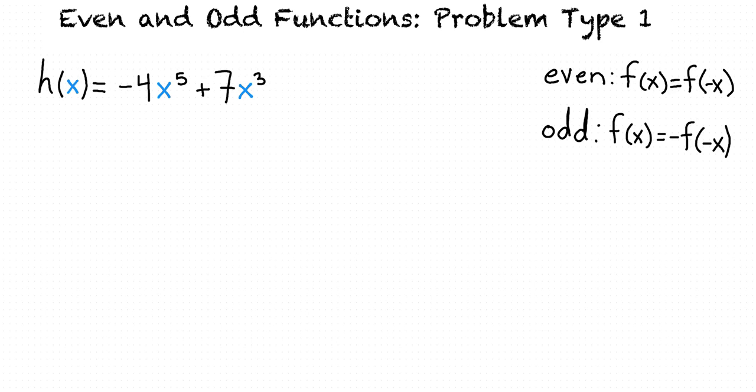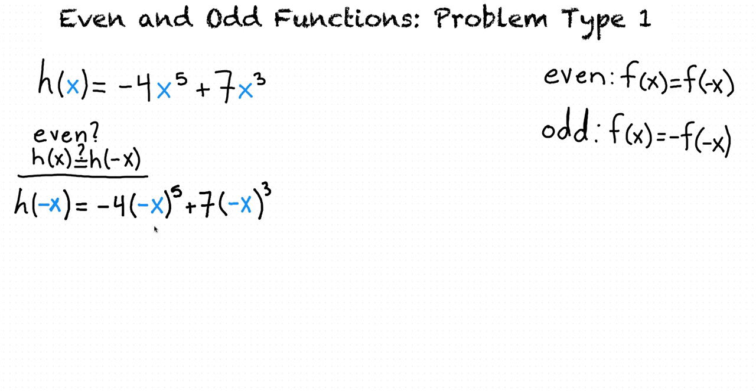Consider the function h(x) equals negative 4x to the fifth power plus 7x cubed. To check if this is an even function, we should find out if h(-x) equals h(x). To find h(-x), we'll replace all the x's in our original function h with negative x, and now we'll simplify this whole equation to see if we can get it to equal our original function h(x).